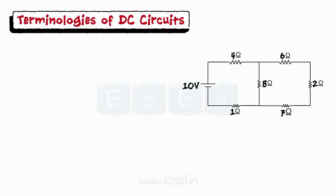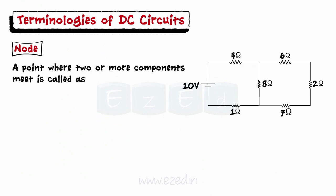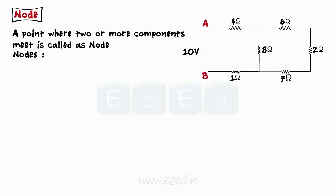For any DC circuit, a node is defined as a point where two or more components meet. Thus, in our circuit, we have different nodes as node A, B, C, D, E and F.